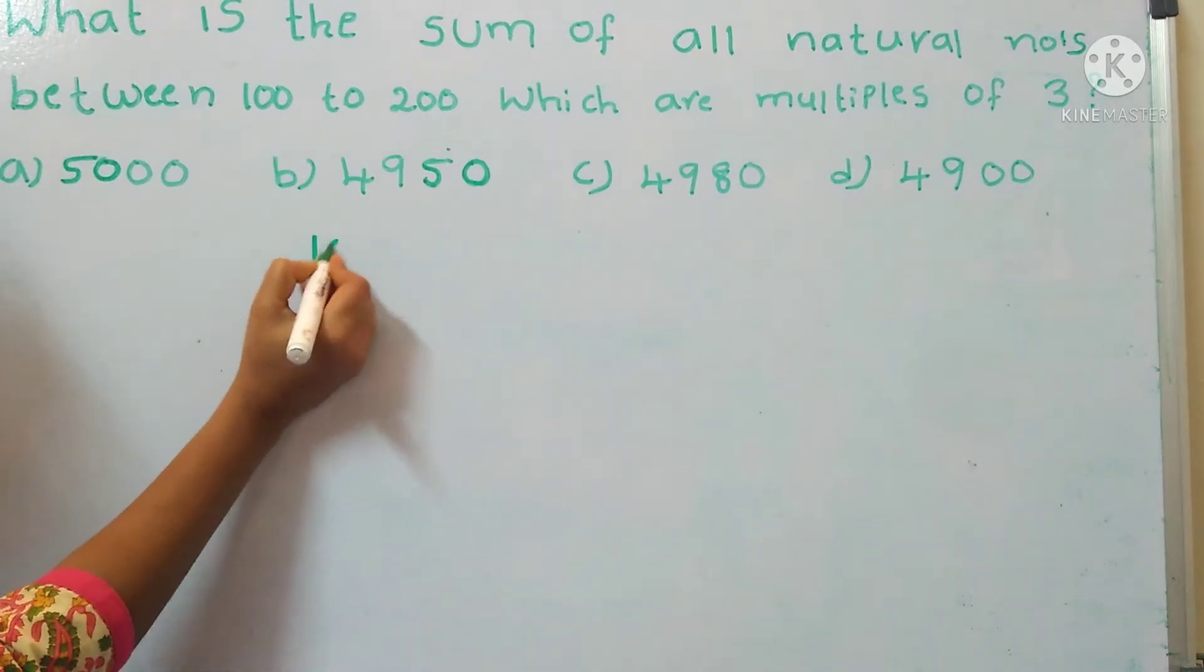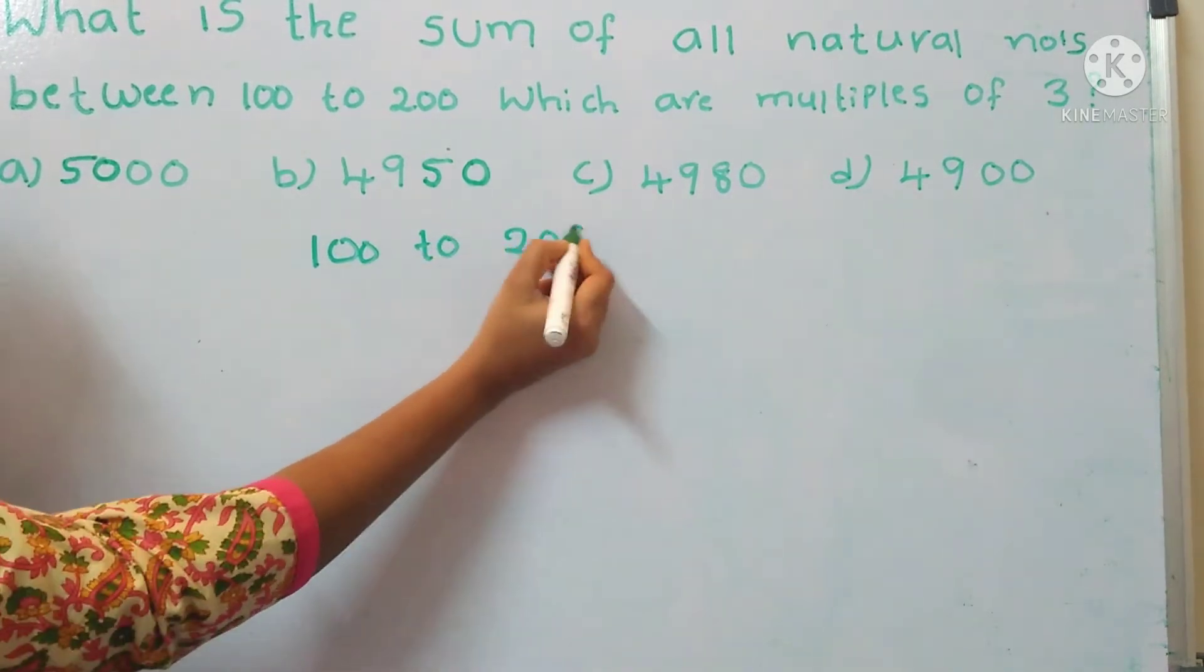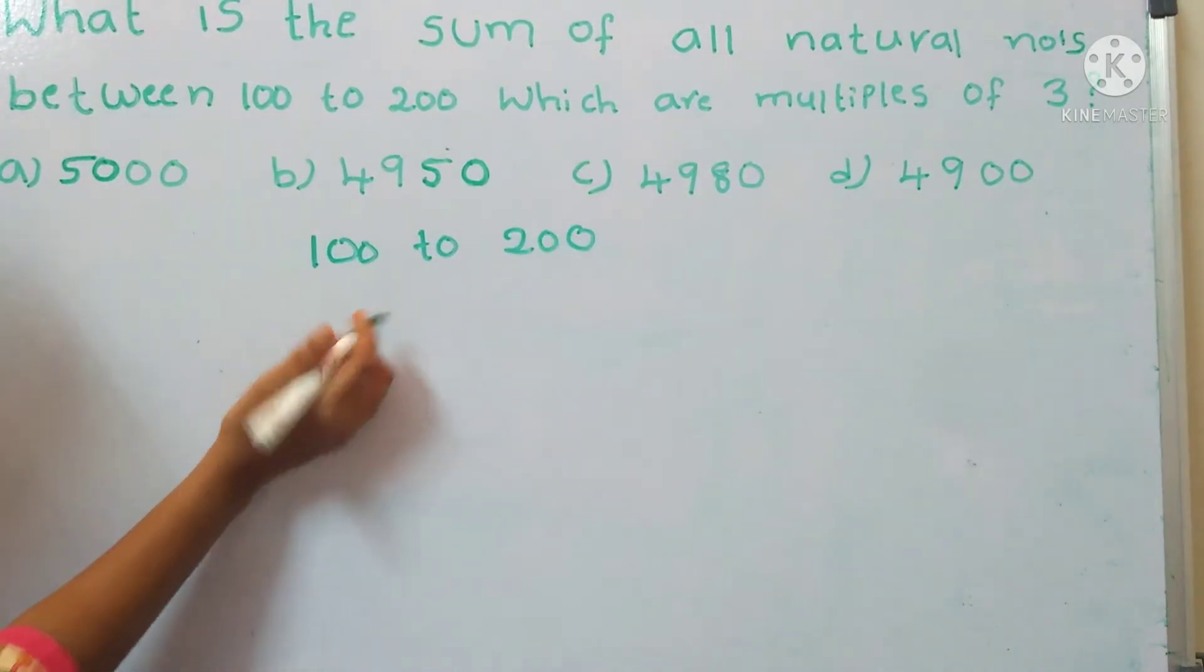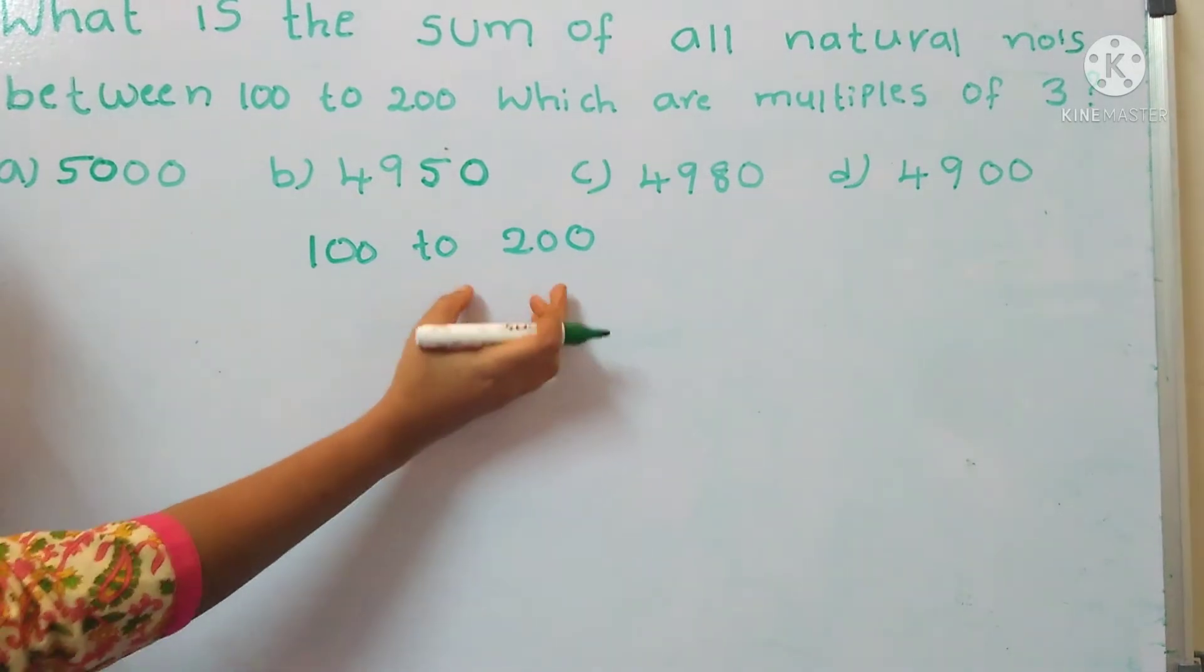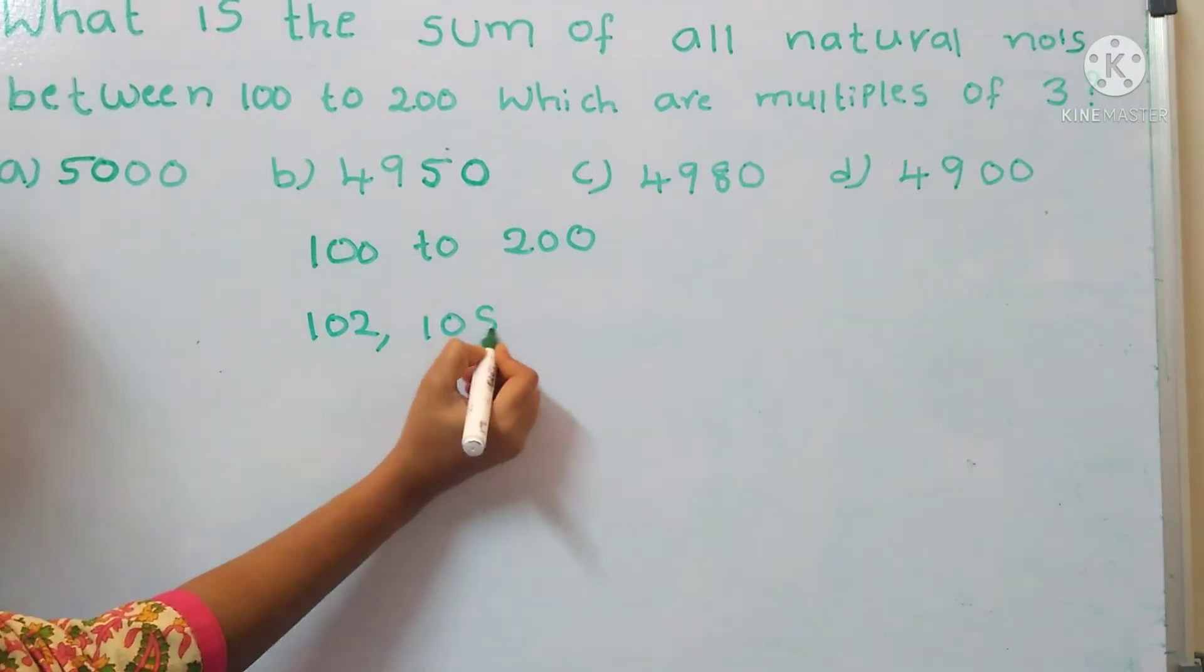The first step is we need to find out the multiples of 3 between 100 to 200. The multiples of 3 between 100 and 200 are 102, 105,